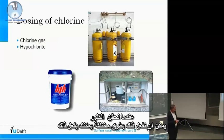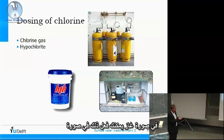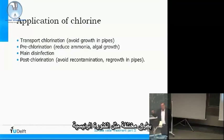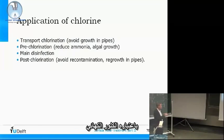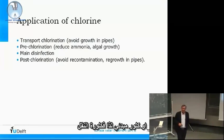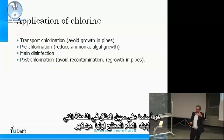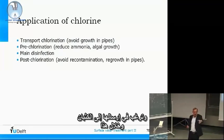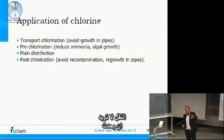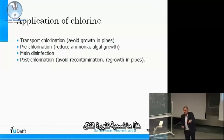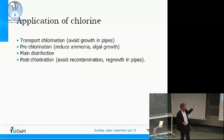When you dose chlorine, you can do it in different ways — as a gas or as a powder. You can apply it in different ways: as a main chlorination, as a post-chlorination, and sometimes also as a transport chlorination or pre-chlorination. Transport chlorination is mainly used when you have pretreated water from, for example, the river Rhine and you want to send it to the dunes. During that transport, you don't want regrowth in your transport main, so you dose a little bit of chlorine.